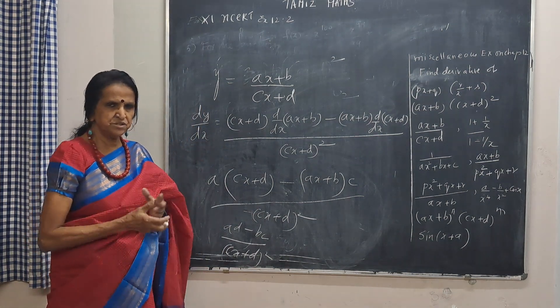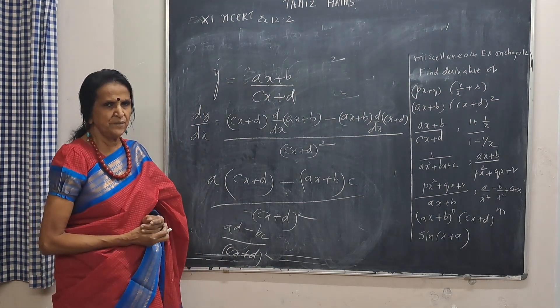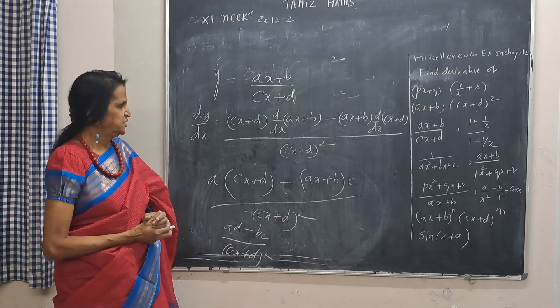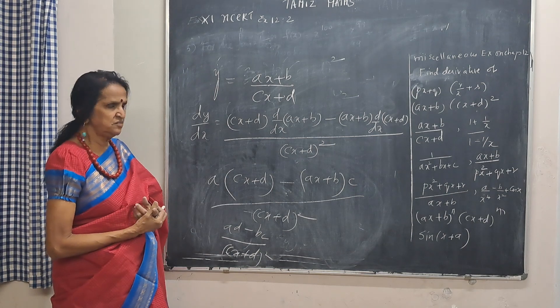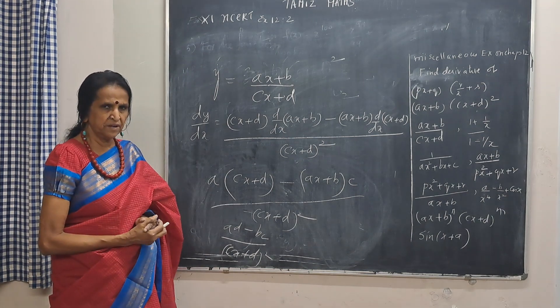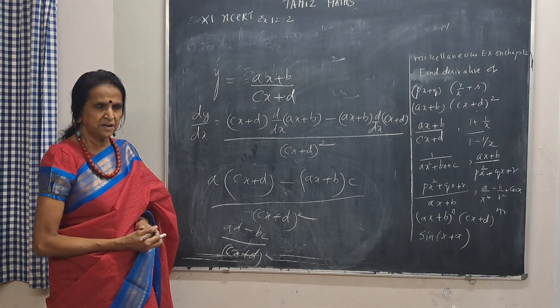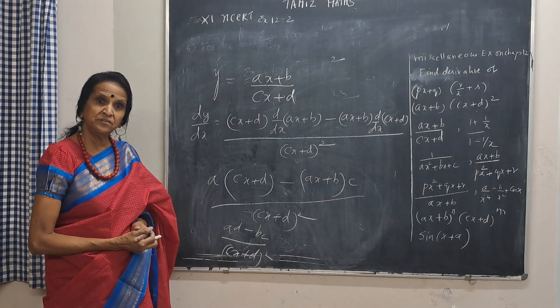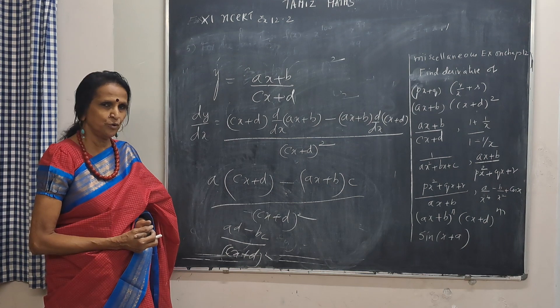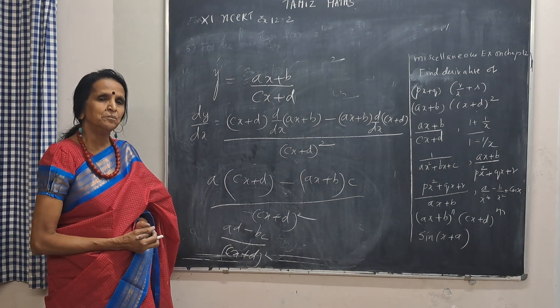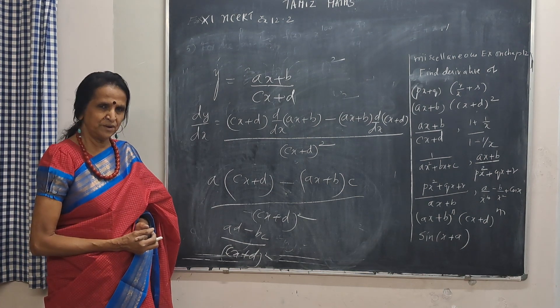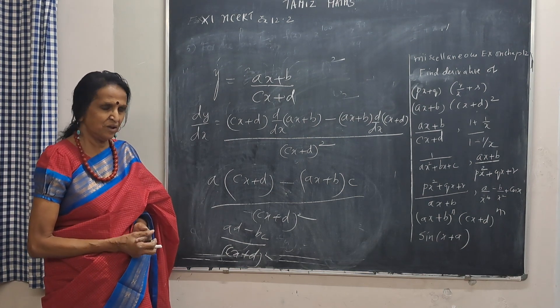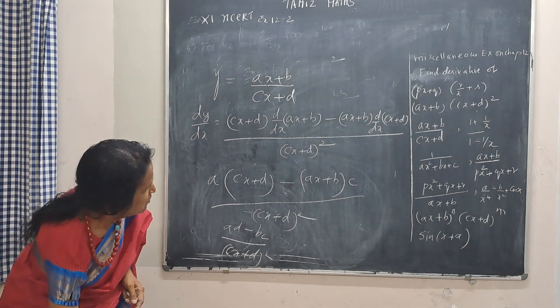So the quotient rule is: denominator into derivative of the numerator, minus numerator into derivative of the denominator, divided by the denominator squared.